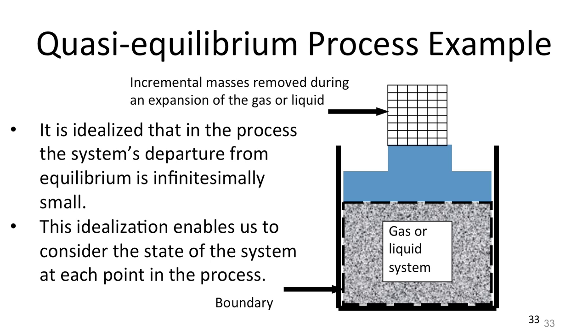There's a weight shown as a grid representing multiple small pieces of weights. We can remove the mass from the piston to change the condition of the system trapped inside the piston-cylinder enclosure.